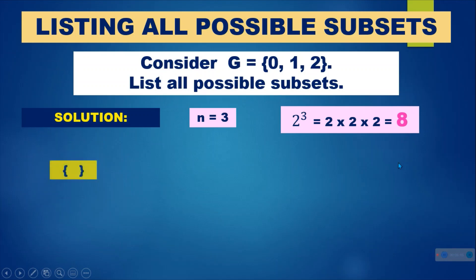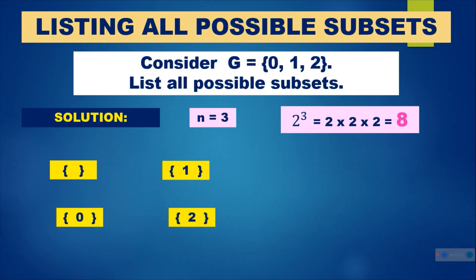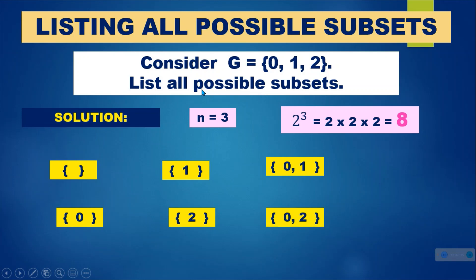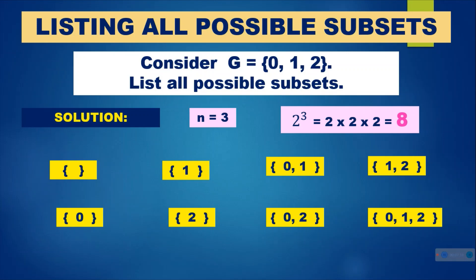Let us see the 8 subsets. The first one is the empty set. The second is {0}. The third is {1}. The fourth is {2}. Then {0, 1}, {0, 2}, {1, 2}, and finally {0, 1, 2}. So we have 8 subsets in all — 1, 2, 3, 4, 5, 6, 7, 8 — from 3 elements.